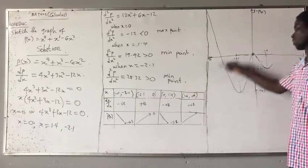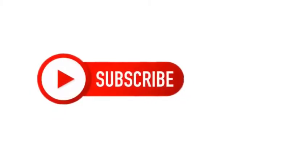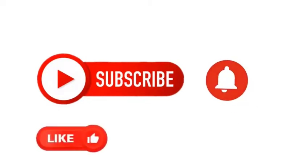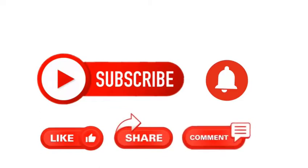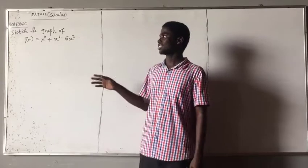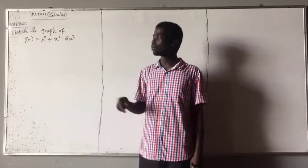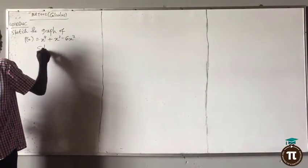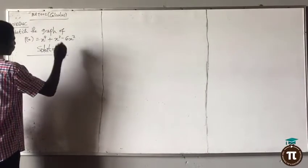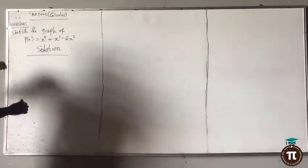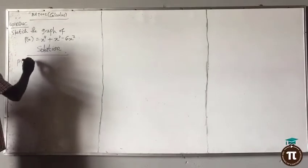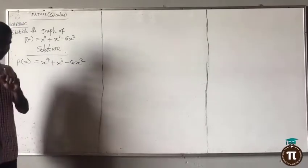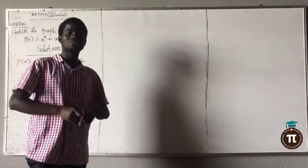Then it goes off forever. Sketch the graph of p(x) = x raised to power 4 plus x raised to power 3 minus 6x squared. Now for you to be able to sketch the graph of something, there is one paramount thing you need to know: you need to differentiate — you need to find the derivative.